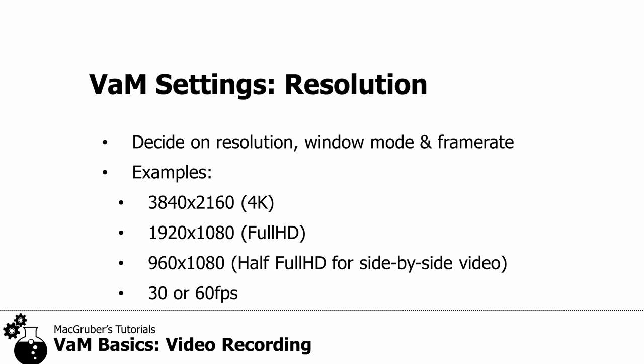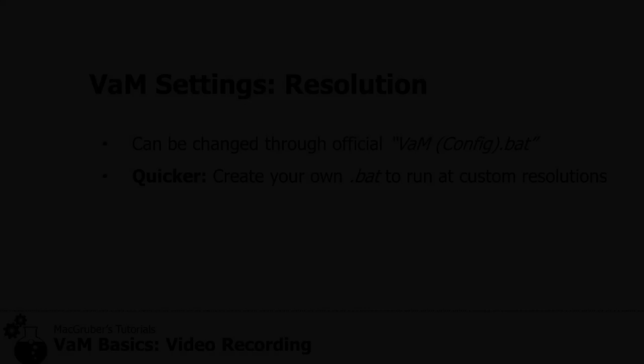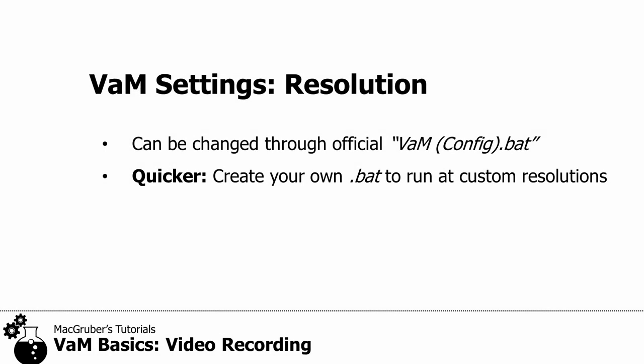For frame rate there shouldn't be any reason to go anything except 30 or 60 fps, because it's the standard for YouTube and similar platforms. The resolution for VAM can be changed by just running the VAM config.bat that's in your main VAM directory. But if you change that more often because you're switching between different resolutions for different videos, you can create a custom .bat file that runs VAM at some custom resolution. I will put a link in the video description for a tutorial on how to do that.